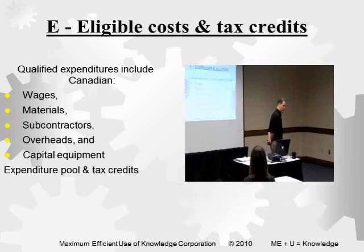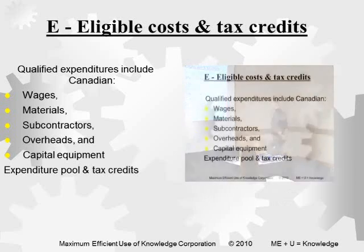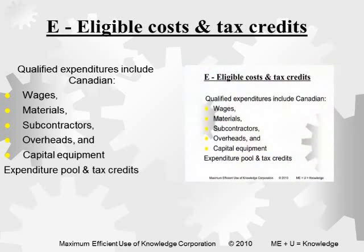Moving on to Section E: costs and credits. Basically, the kinds of costs that are eligible — assuming that we have at least one eligible project, we've written up a description, we think it qualifies, we've identified the activities, and now we want to submit a claim. What kind of costs can we attribute to the work?